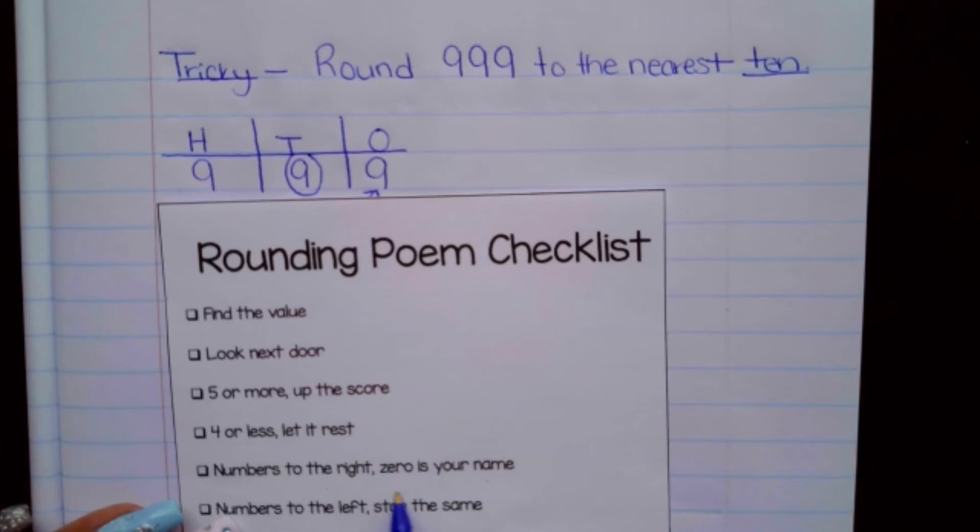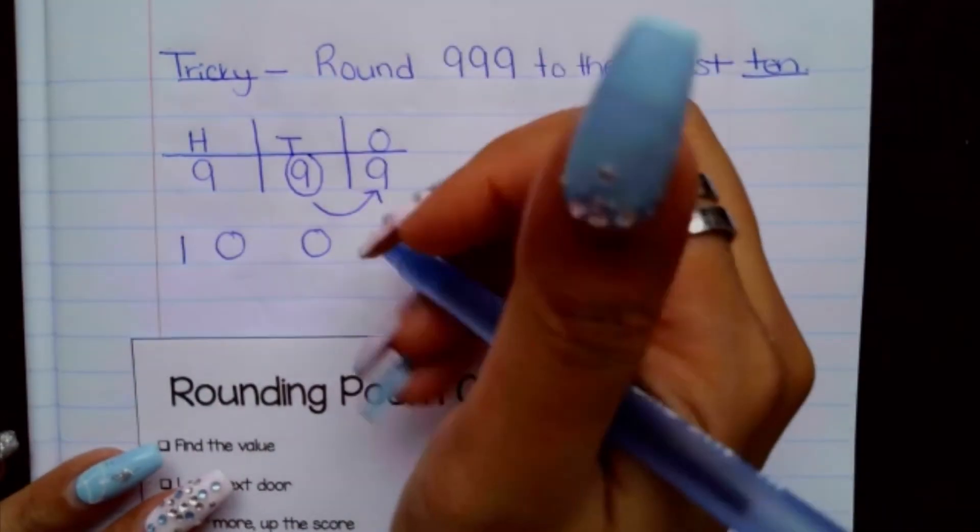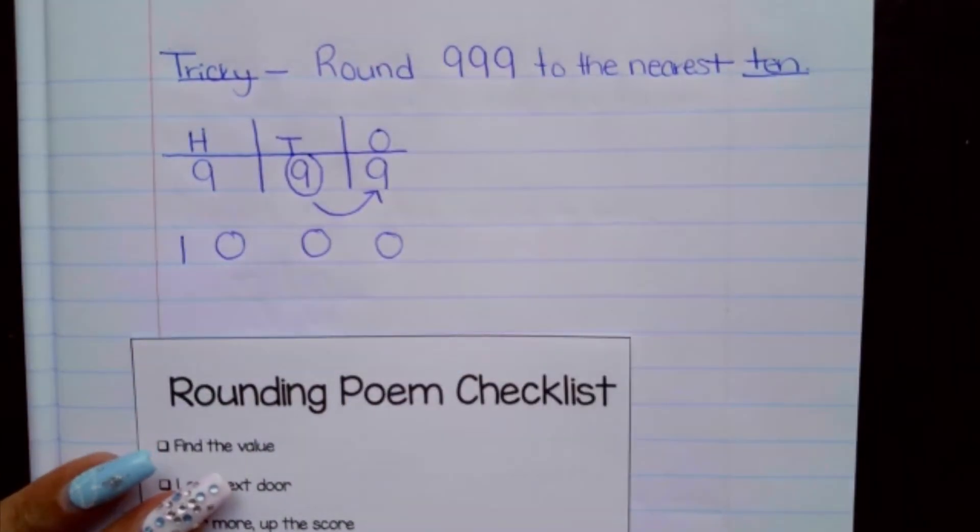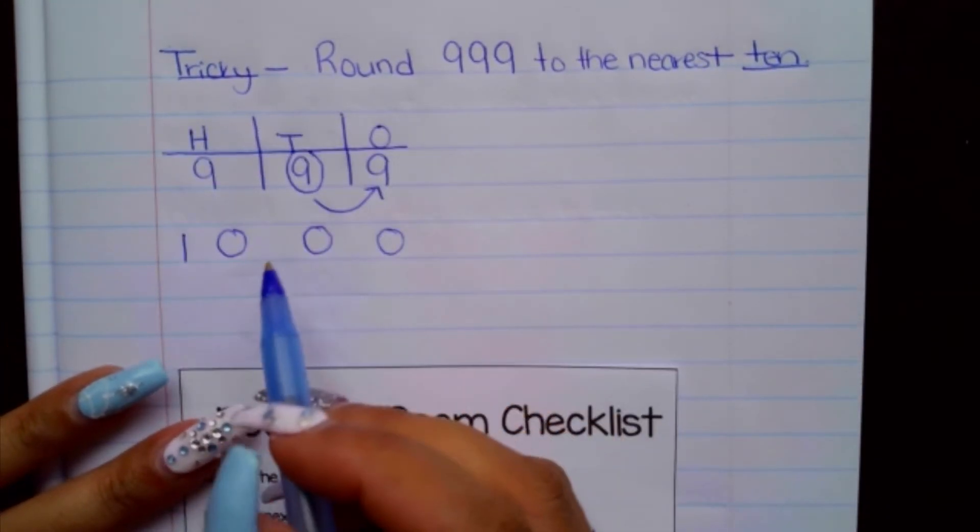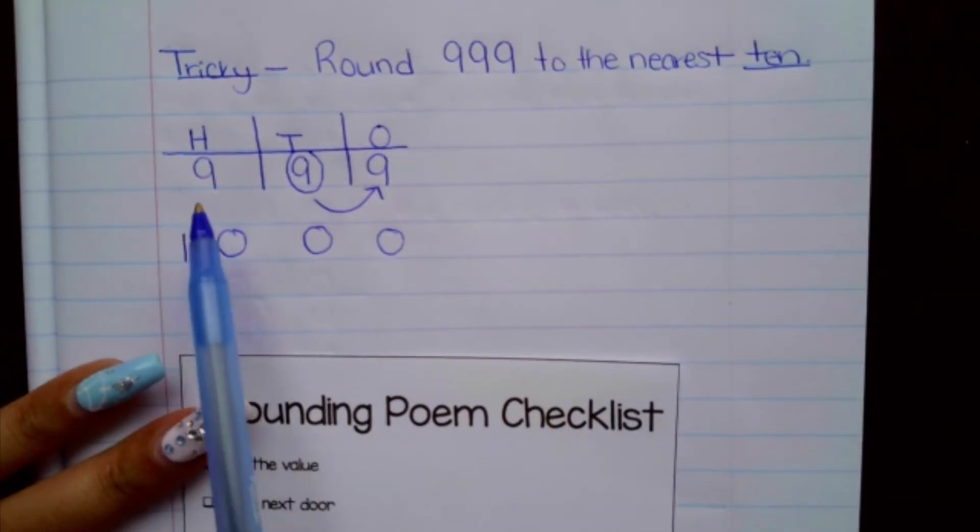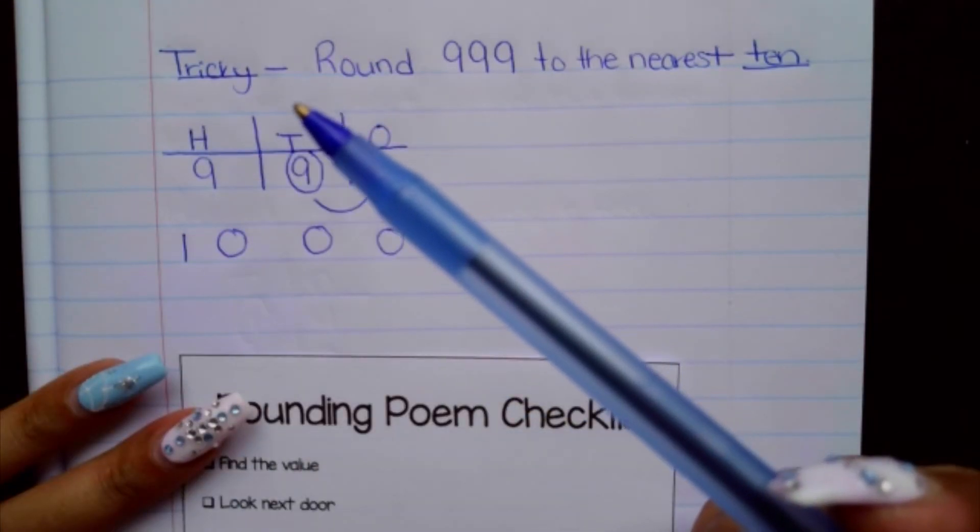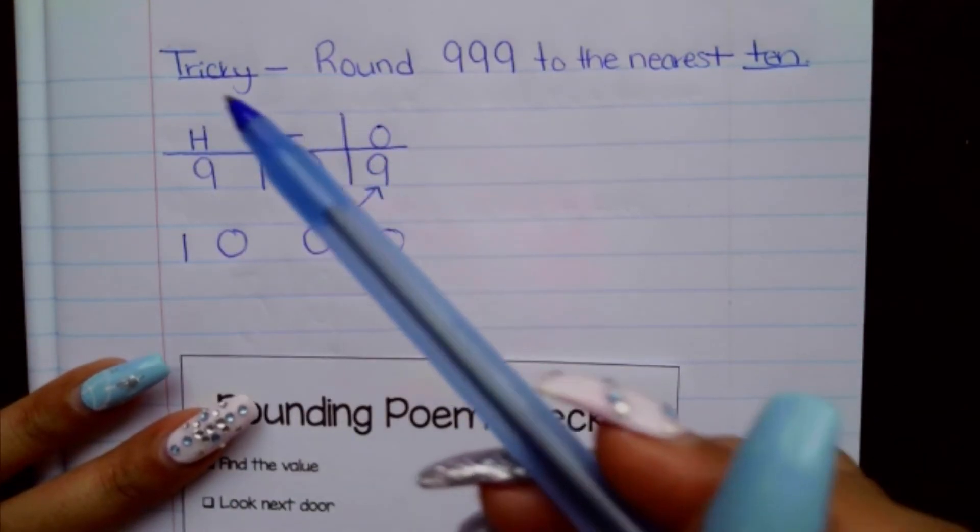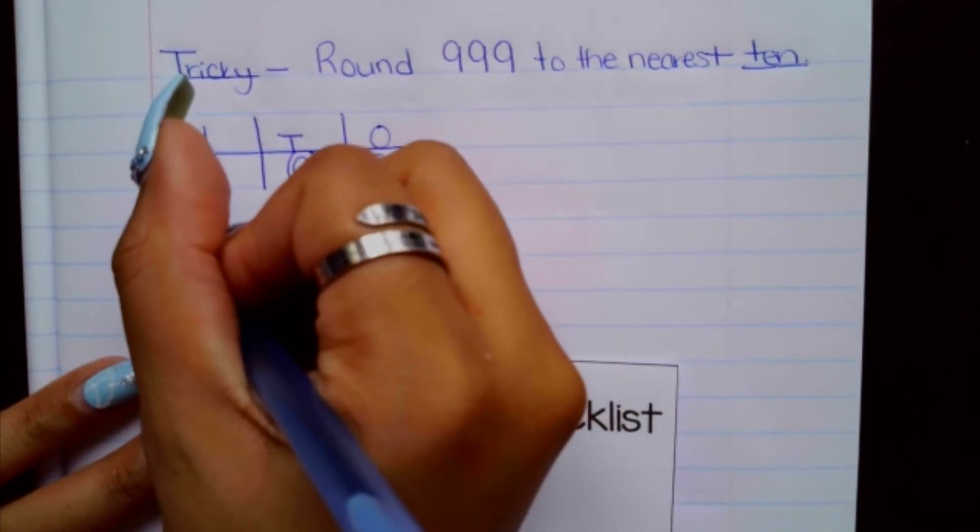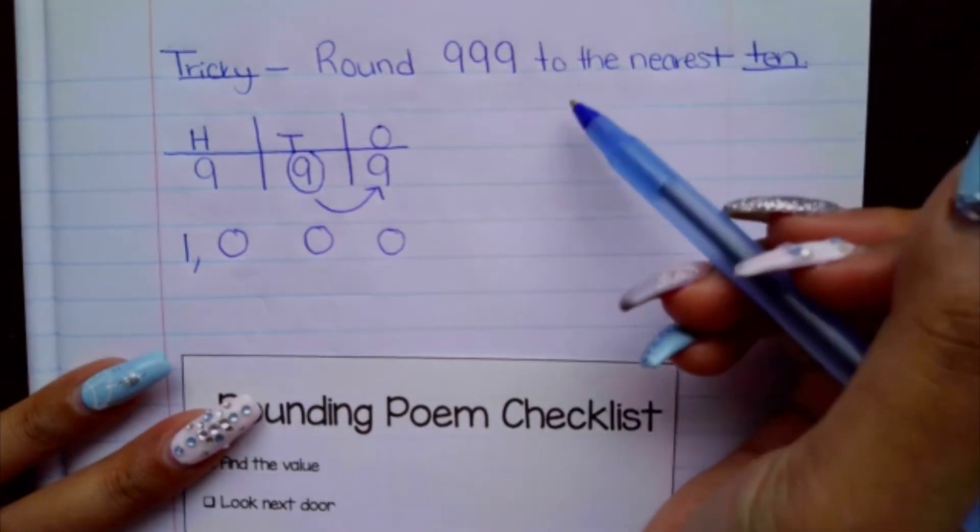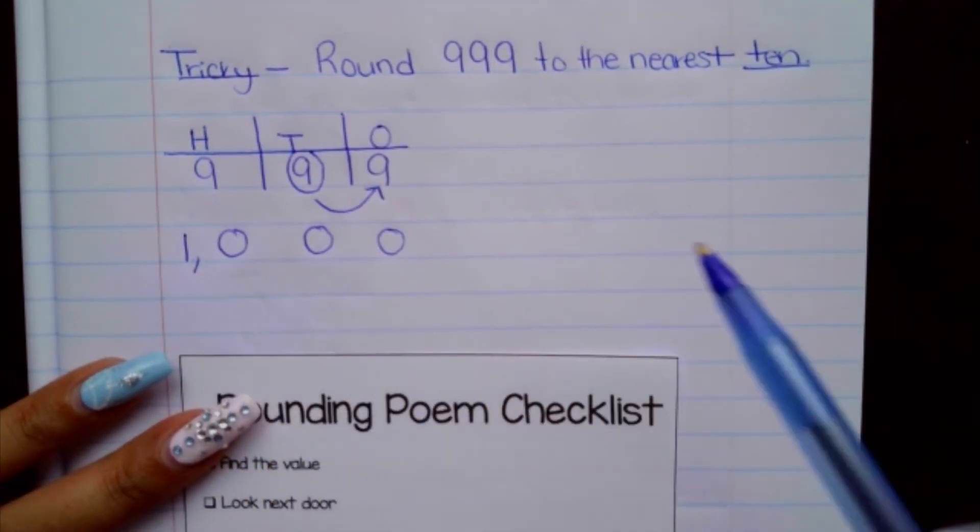And then it says numbers to the right, zero is your name. And then numbers to the left stay the same. So in this case, it did get changed because you're going up one and then nine plus one equals 10. So that's why this digit ended up changing into 10. And so 999 rounded to the nearest 10 is a thousand.